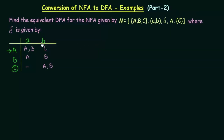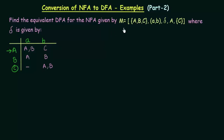So here we have a question: find the equivalent DFA for the NFA given by M equal to {A, B, C}, {A, B}, δ, A, C, where δ is given by the transition table shown. This is actually the formal definition or the formal way of representing an NFA.